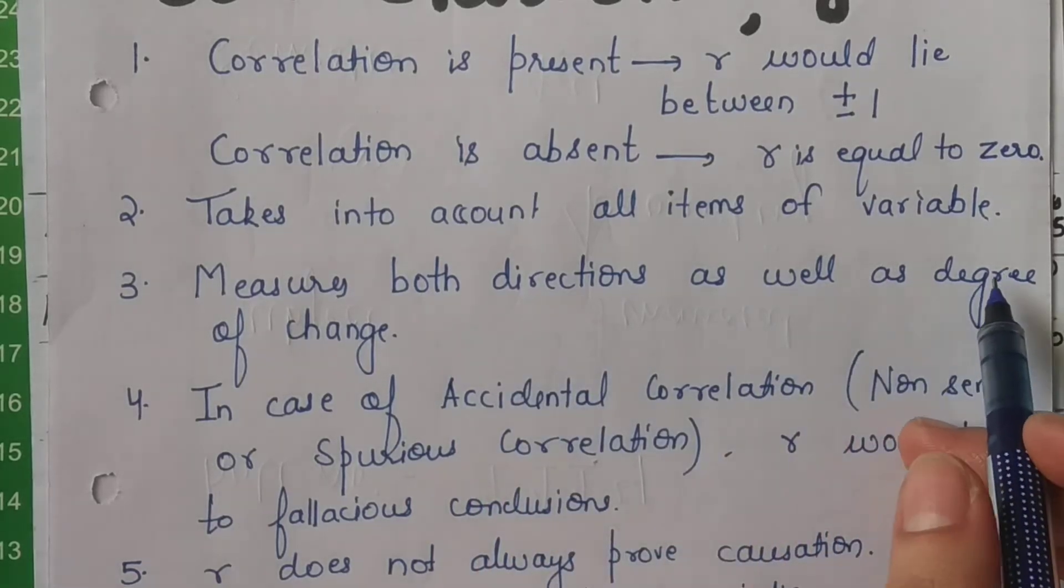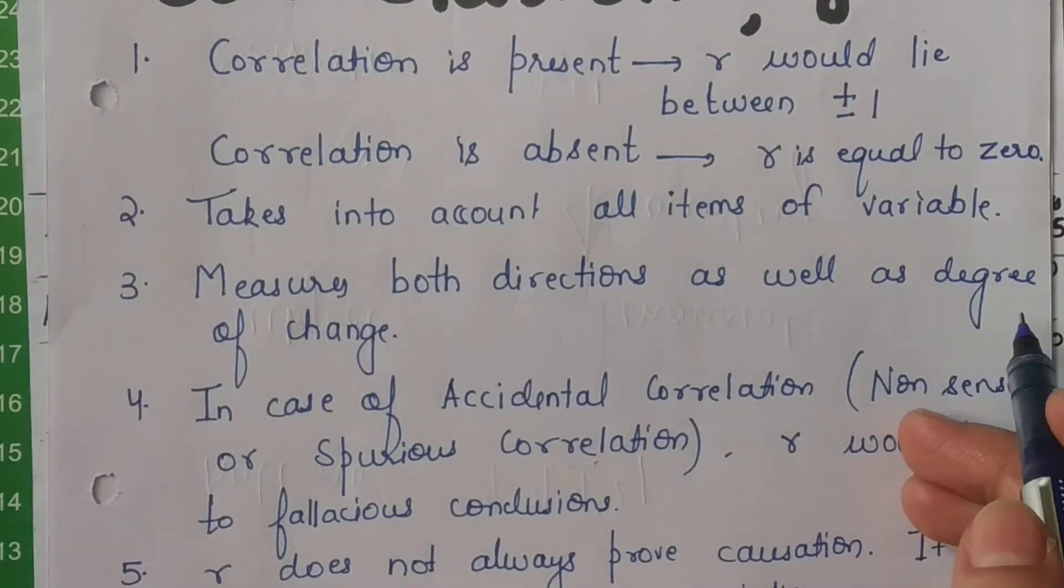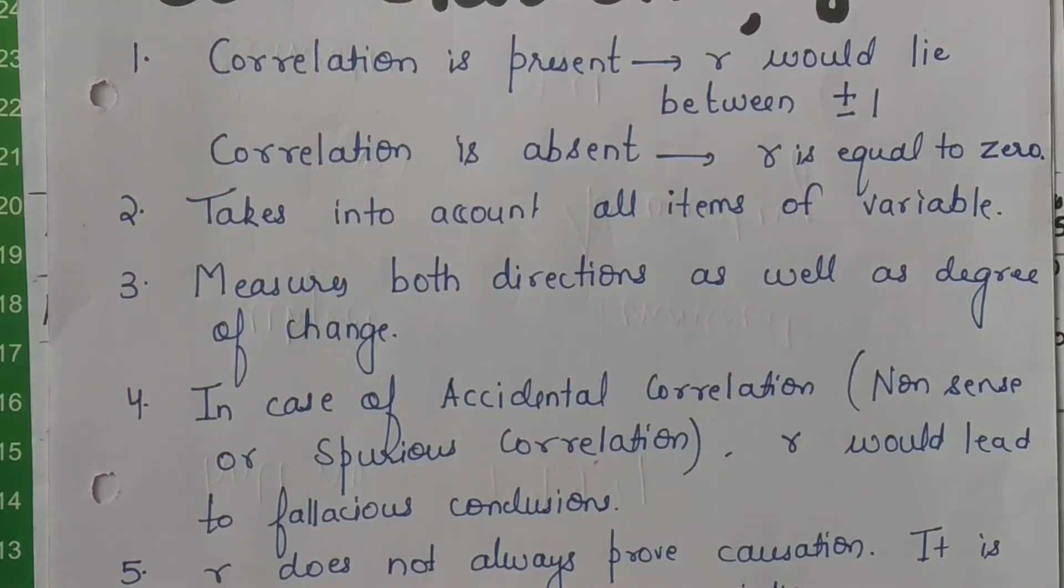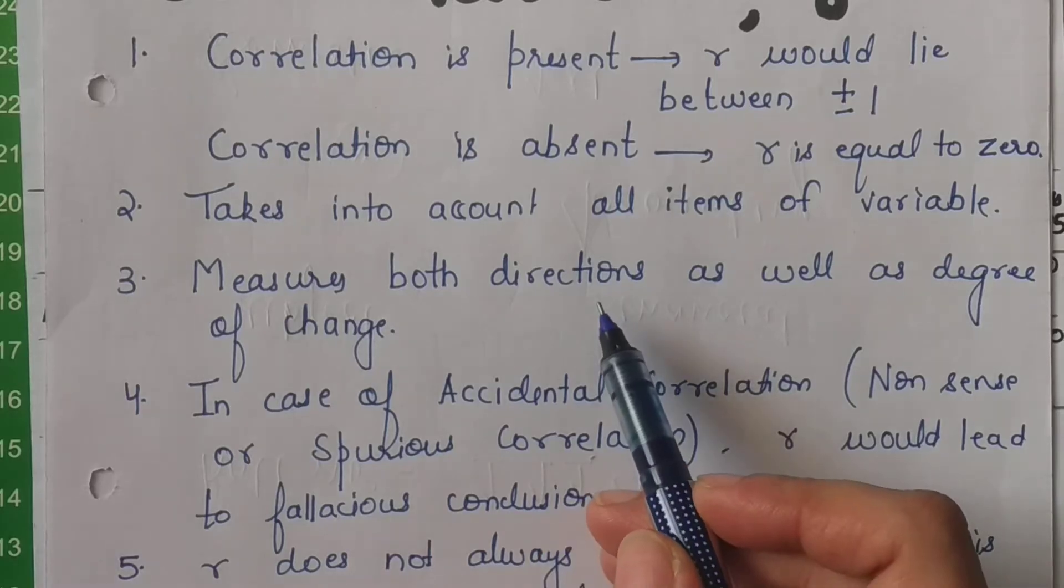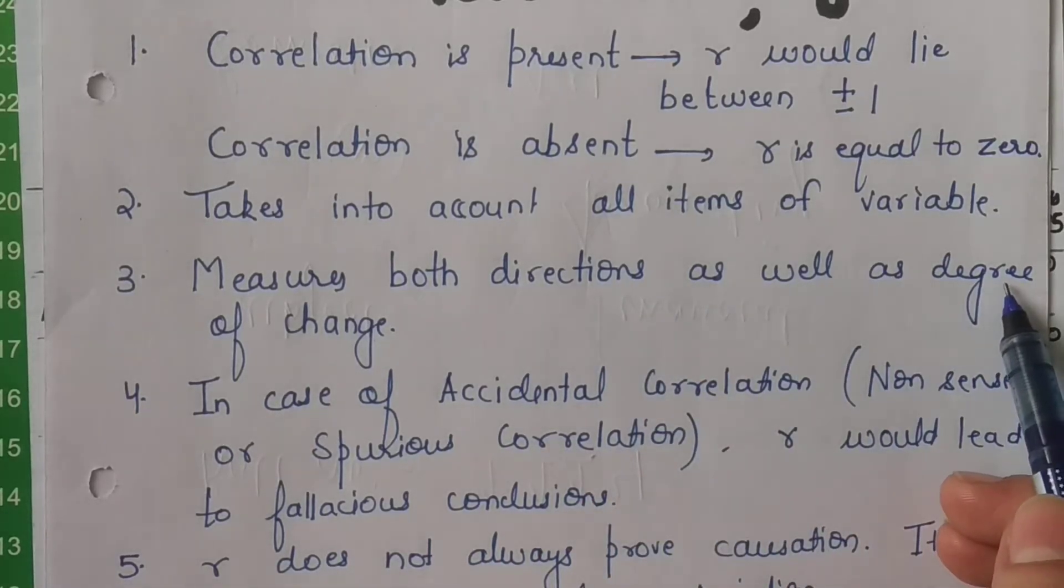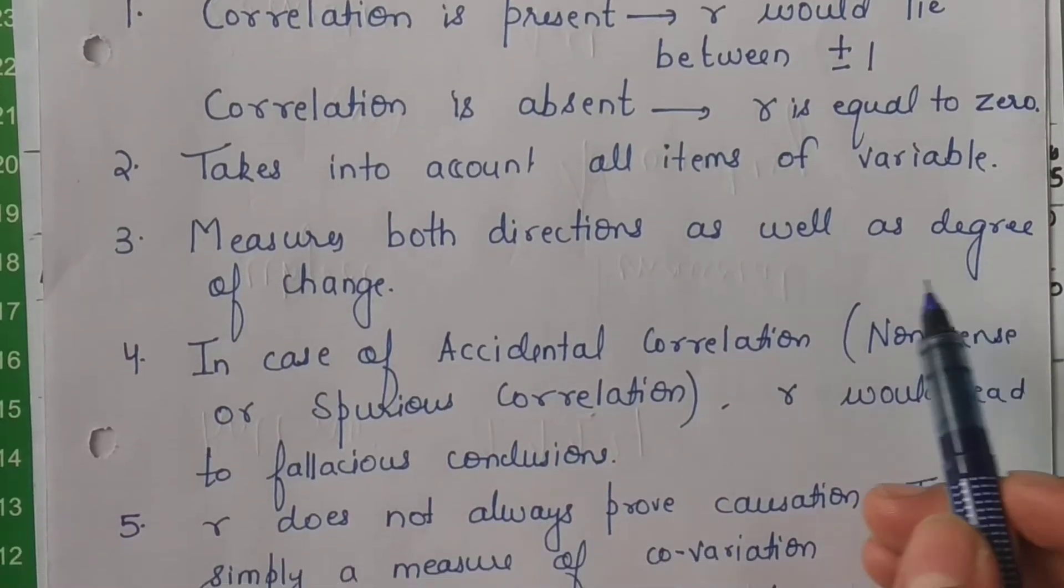Inke beech ka relation negative hai ki positive hai, ki agar ek badhta hai to dusra badhta hai ya kam hota hai. Balki yeh yeh bhi batata hai ki inki degree of change hai kitne hai. Kya woh bohot zada strong relationship hai, ya bohot weak relationship hai. Toh na sirf aapko direction batata hai, balki strength of change or degree of change bhi batata hai.